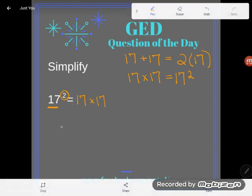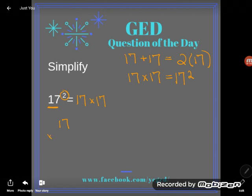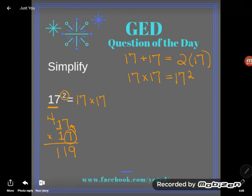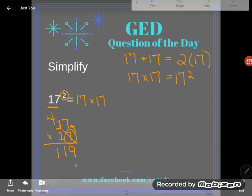So even if you don't have that memorized, we could sure work that out in scratch work. Let's go ahead and do so. Let's multiply 17 by 17. Well, 7 times 7 is 49. I'll drop that 9 and carry that 4. 7 times 1 is 7, plus 4 is 11, and I'm done with my ones.